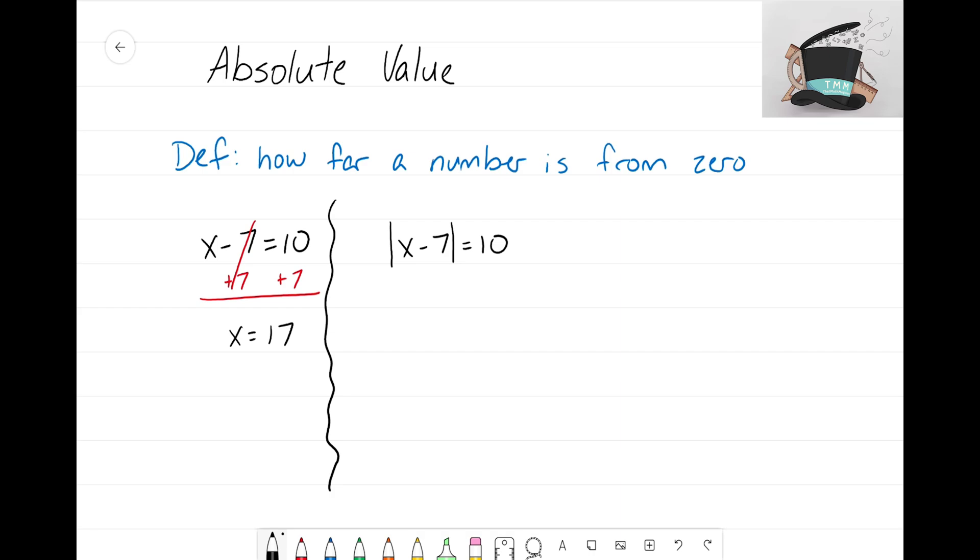So how we want to solve this problem is we want to split this problem into two. What I mean by that is I'm going to draw arrows like this to show you the two different ways we're going to solve this. I'm going to rewrite the equation twice. But here's what I'm going to do to this second equation. Because of the fact that the absolute value changes,